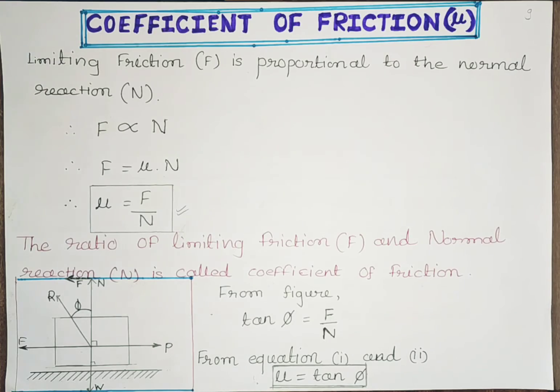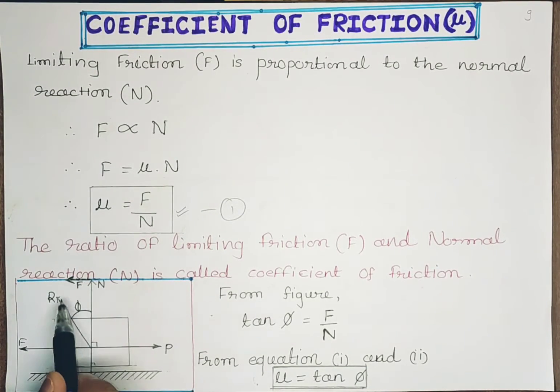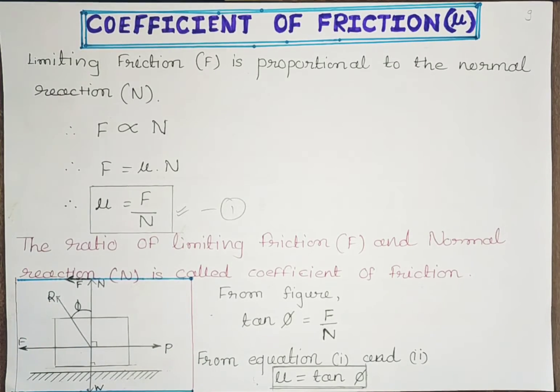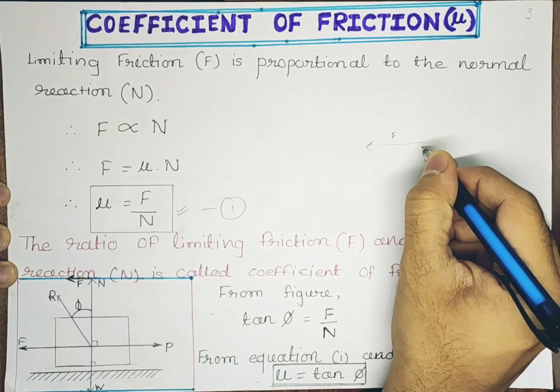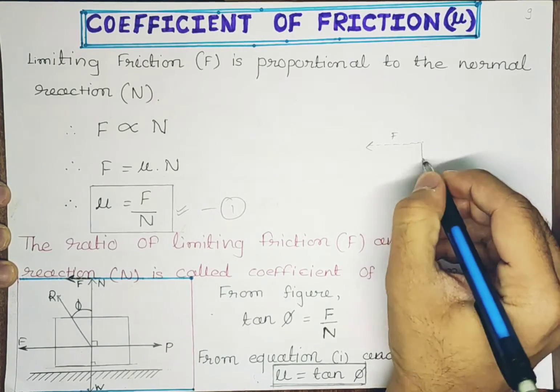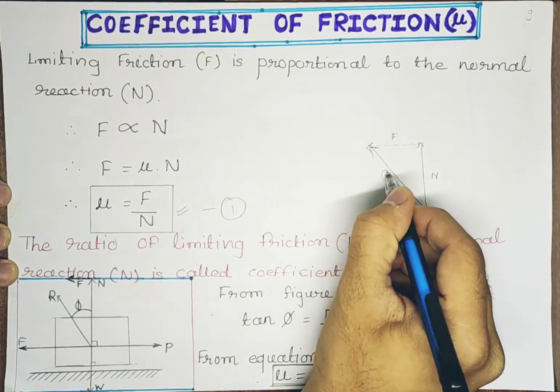This is the first formula for coefficient of friction. This frictional force can also be shown here as the horizontal component. If I show this triangle here, it would look like this: this is F, this is N (normal reaction), and this would become R (resultant force).